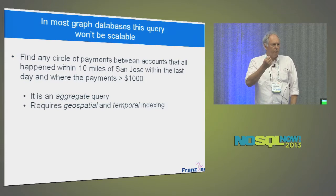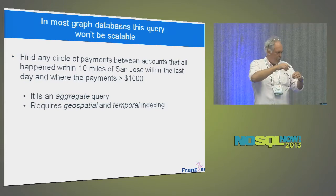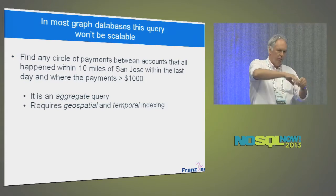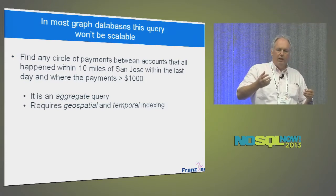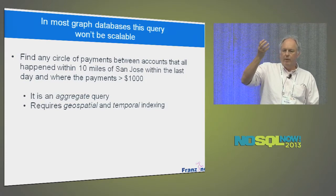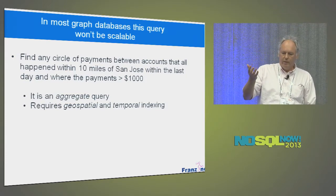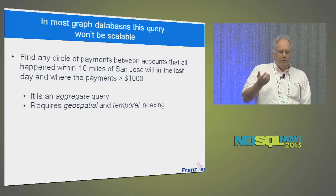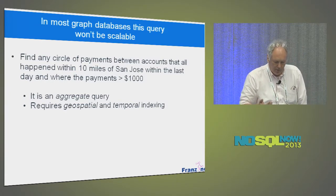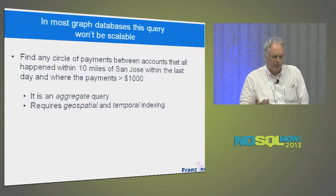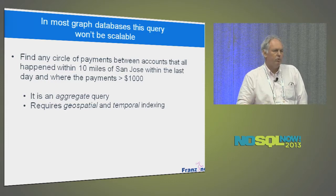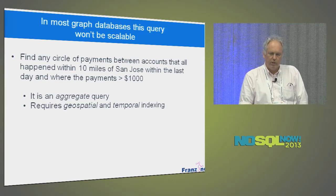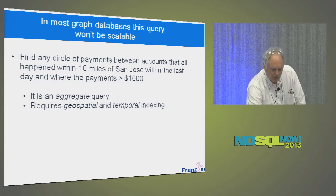Graph databases work fantastically if you start with one node and do a fan-out. If you want to do a big aggregate query, you're better off with something that works like a relational database, or at least the principles of relational databases. And most graph databases don't do much with geospatial and temporal data.